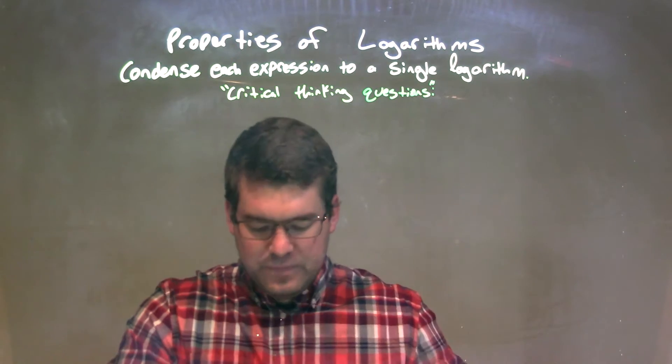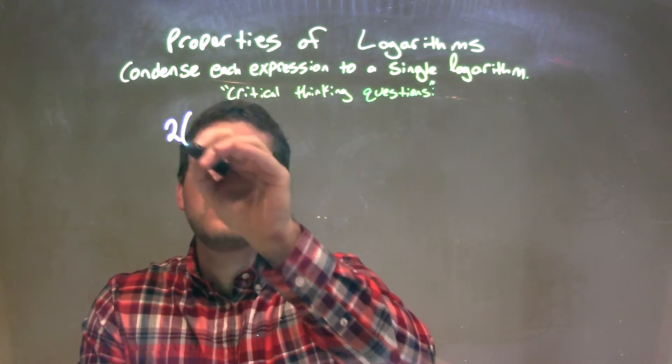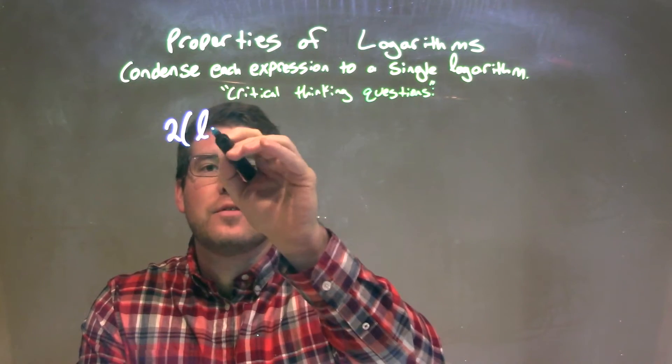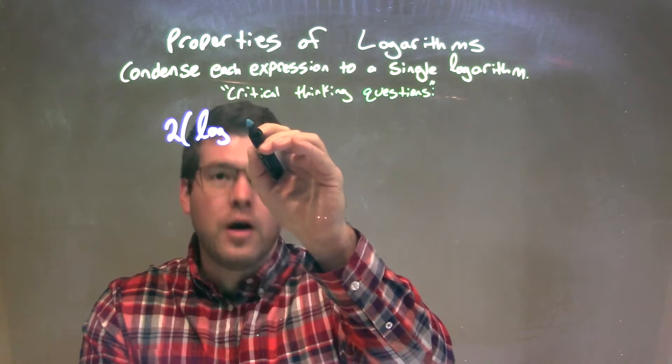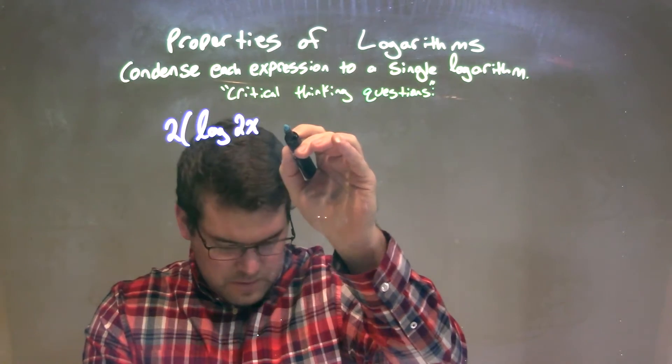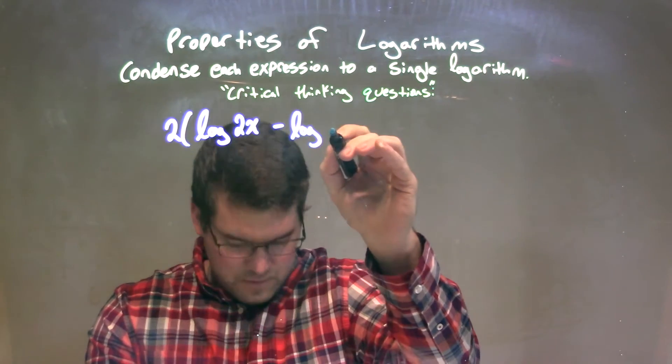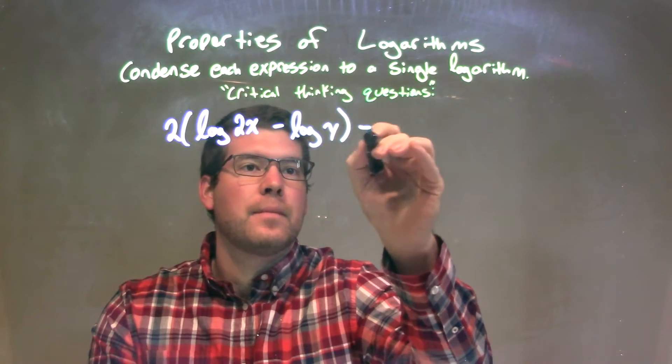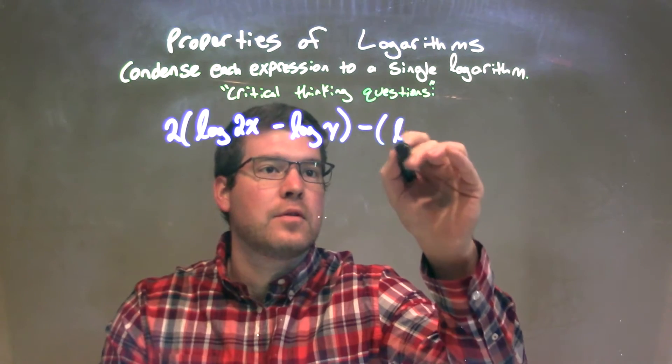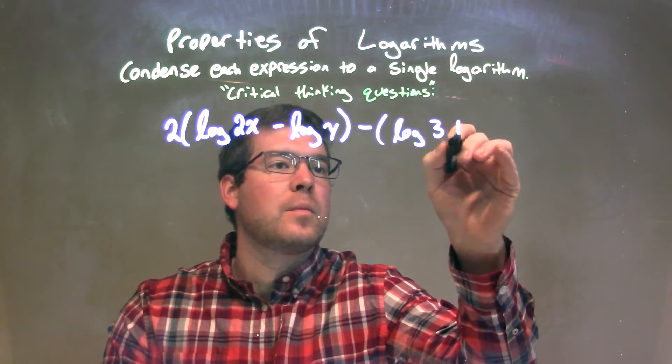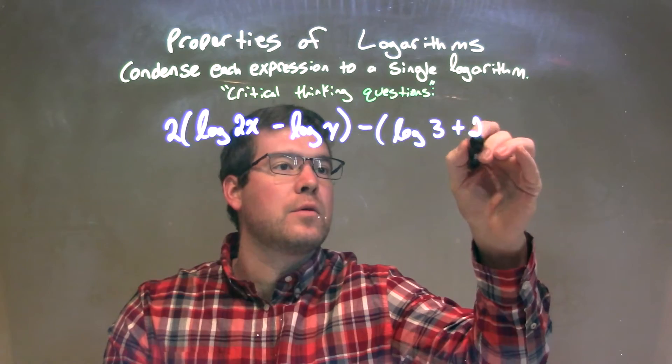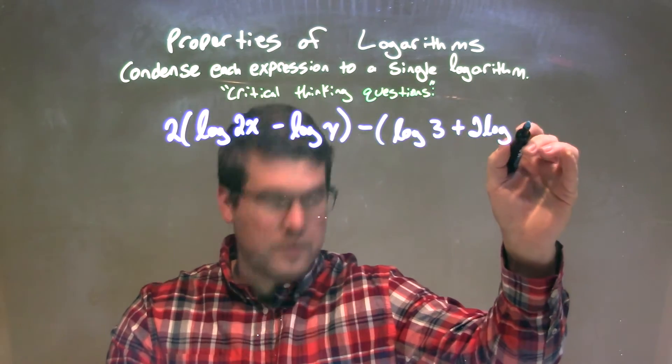So, let's try this one. 2 times parentheses log of 2x minus log of y, close parentheses, minus parentheses log of 3, 2 plus 2 log of 5, close parentheses.